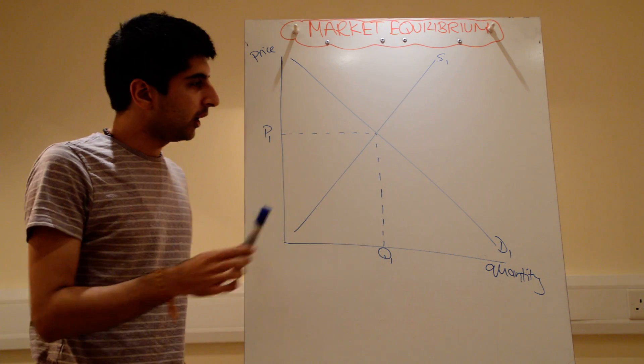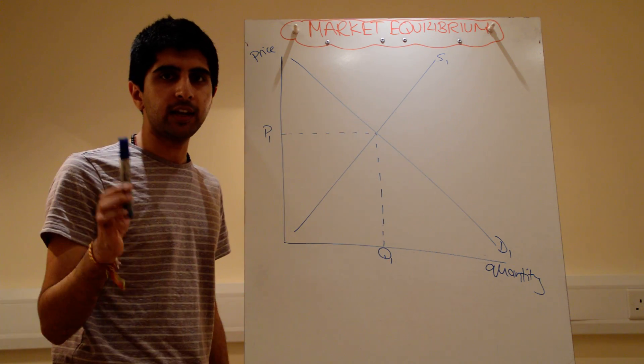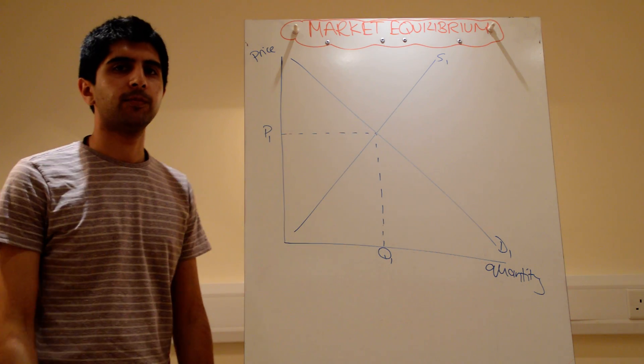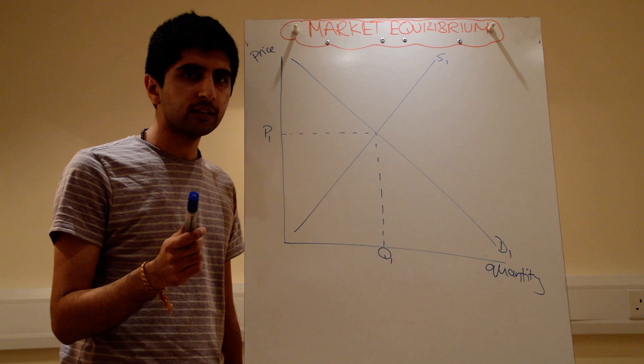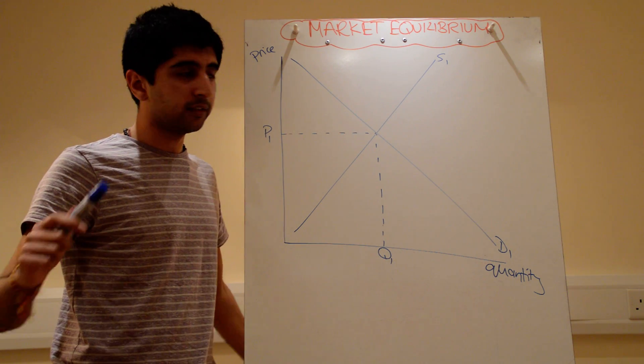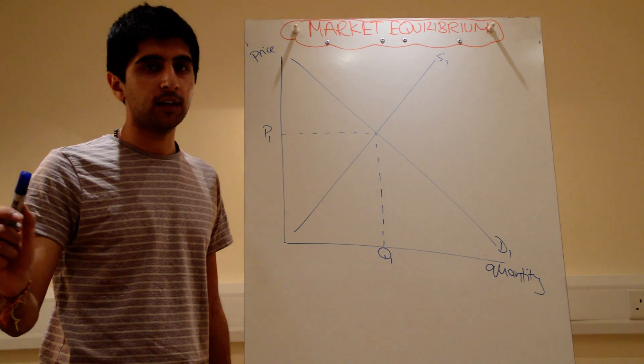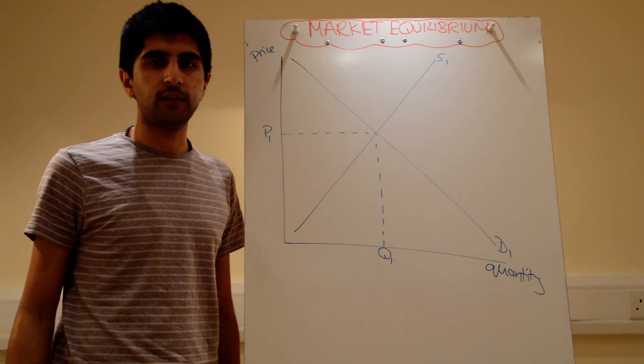I'm going to tell you now that where they cross is the market equilibrium. What is a market, first of all? A market is any place, doesn't have to be a physical place, just any place where buyers meet sellers to exchange goods and services.